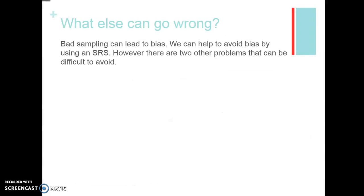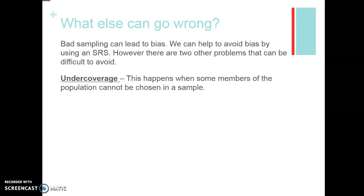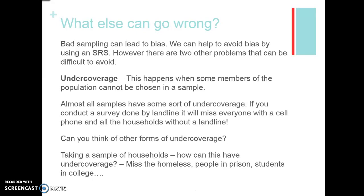Two other problems can be difficult to avoid because our goal is to not have bias — not systematically overestimate or underestimate. Under coverage means there are some members of the population that cannot be chosen in the sample. If you're doing a sample by emailing everybody, you miss everyone without an email account — potentially a large proportion of the population. Almost all surveys have some sort of under coverage. Calling on a landline misses everyone without one.